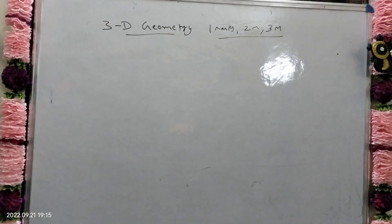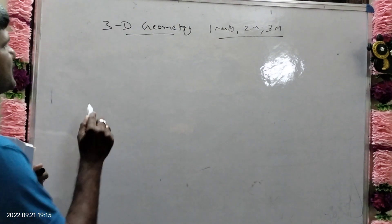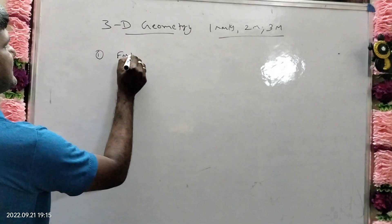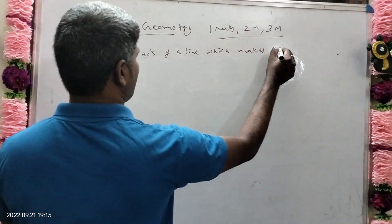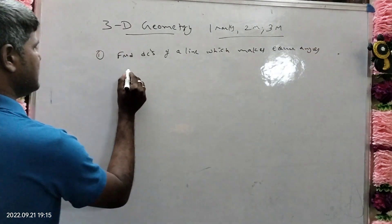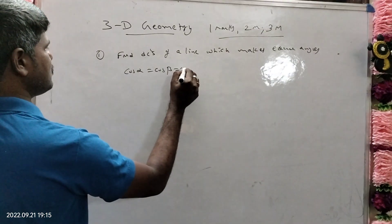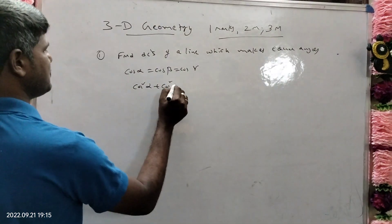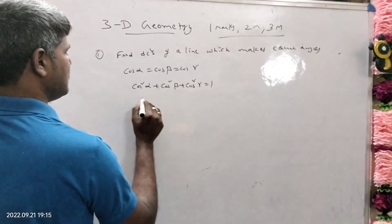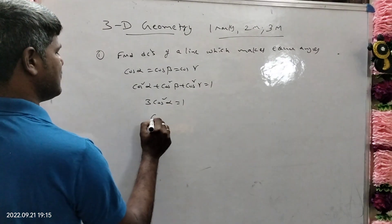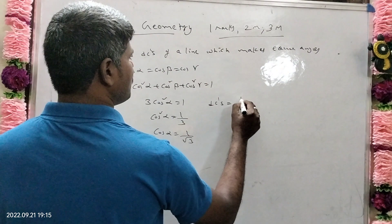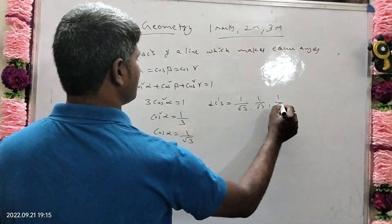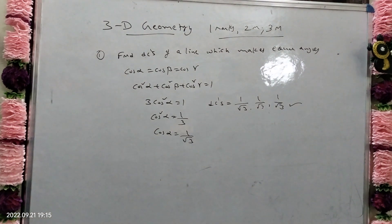Dear students, today we are discussing very important 1-mark, 2-mark, and 3-mark questions in 3D geometry. The first 1-mark question is: find the direction cosines (DCs) of a line which makes equal angles with the axes. That means cos α = cos β = cos γ. We know the formula: cos²α + cos²β + cos²γ = 1. Since all are equal, 3cos²α = 1, so cos²α = 1/3, and cos α = 1/√3. Therefore, DCs = (1/√3, 1/√3, 1/√3). This is a very important 1-mark question in 3D geometry.